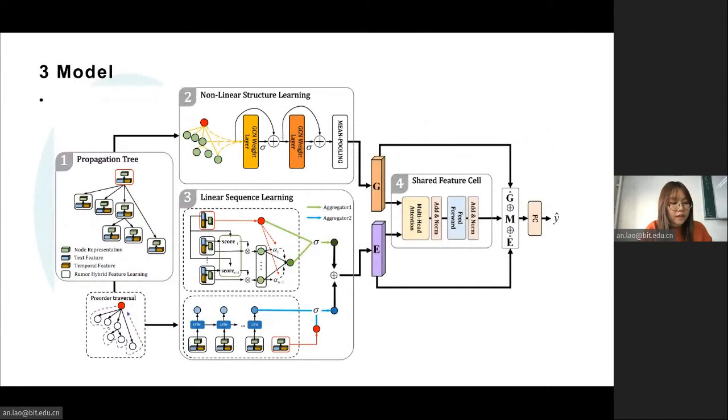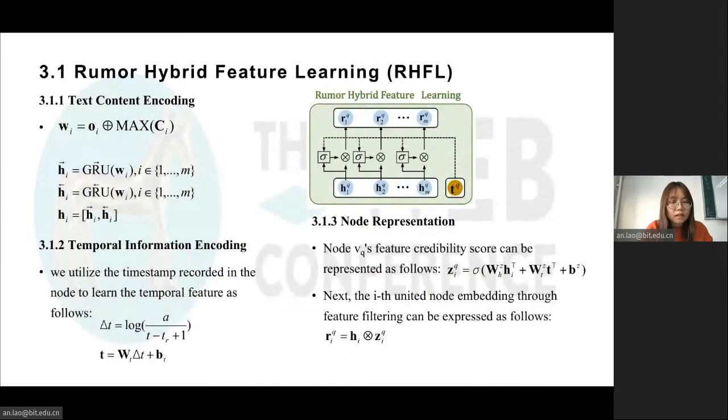Our model RDLNP consists of four components. In order to learn the significant features in the propagation structure, it is crucial to model the node's representation efficiently. The purpose of the RHFL module is to generate the unified vector by exploiting textual and temporal information simultaneously, and highlighting the salient features that are likely to reveal the veracity.